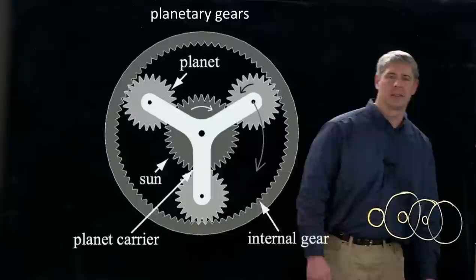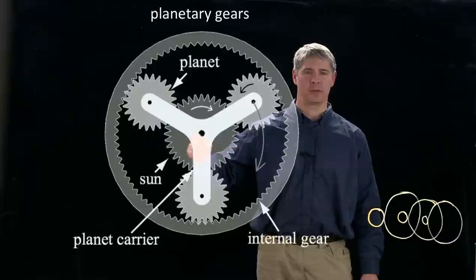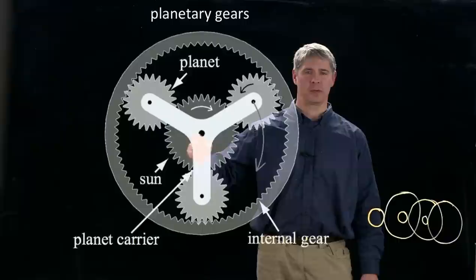Here's one. These are called planetary gears. So the input here is this gear. And so the motor spins this, which is called the sun, which causes these planets to spin around the inside of this internal gear.